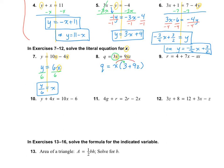X multiplied by 9Z does indeed equal 9XZ. I pulled out the X because my goal is to solve for X. Right now X is being multiplied by the entire quantity of 3 plus 9Z. So the opposite of that multiplication is division — I divide out 3 plus 9Z on both sides. That gives me Q over 3 plus 9Z equals X, so X is all by itself.